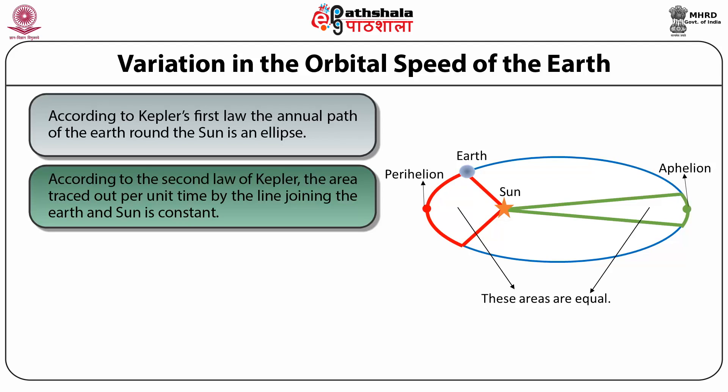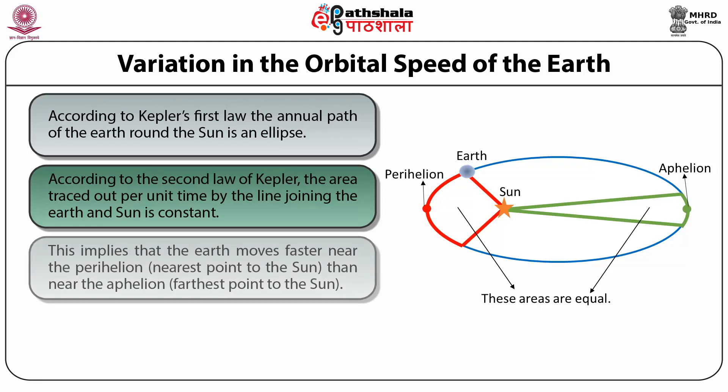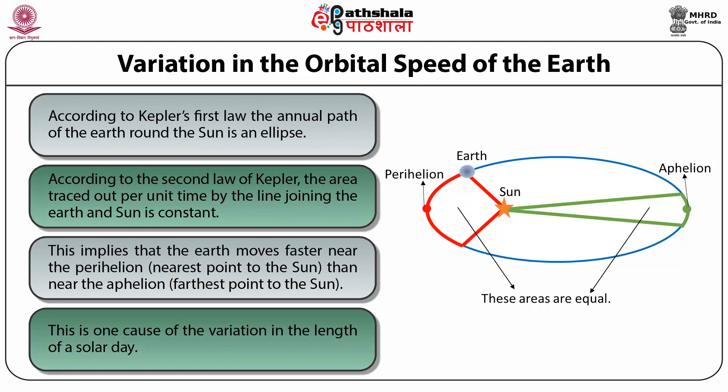The area of both regions is equal. Therefore, according to Kepler's second law, the area swept per unit time has to be constant, which implies that the time taken by the earth to cover those arcs should be the same. This is possible if the earth traverses the arc around the perihelion faster than the arc around the aphelion — meaning the earth moves faster near the perihelion (nearest point to the sun) than near the aphelion (farthest point). This faster motion of earth causes a change in the length of the day, and is one cause of variation in the length of a solar day.